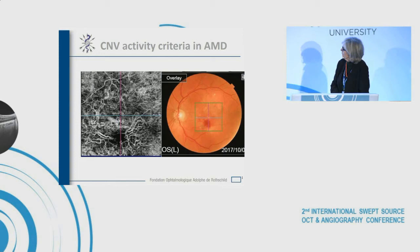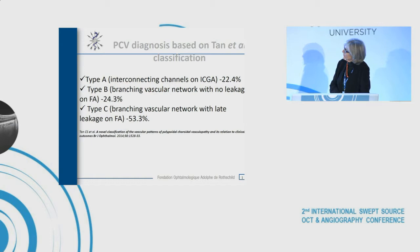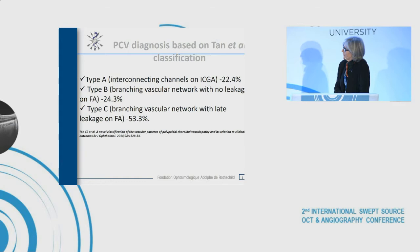PCV diagnosis was based on the TAN classification, which describes three types of PCV. Type A is idiopathic PCV with an interconnecting channel on ICGA. Type B has a branching vascular network with no leakage on fluorescein angiogram. Type C has a branching vascular network with late leakage on fluorescein angiogram. These were the diagnosis and activity criteria of PCV with Swept Source OCTA.